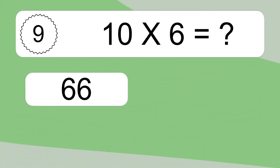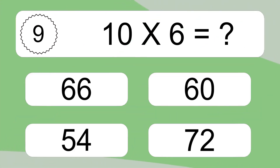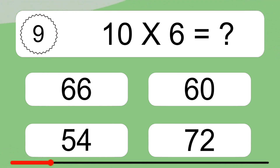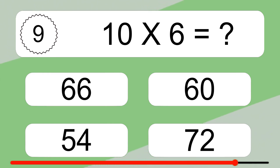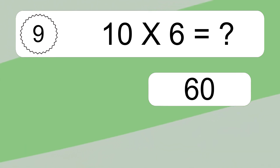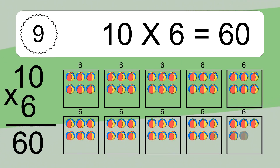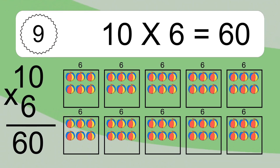10 times 6 equals what? 10 times 6 equals 60. We have 10 boxes, and each box has 6 colorful balls inside. If you count all the balls in all the boxes together, you will have 10 times 6 balls. This equals 60 balls.